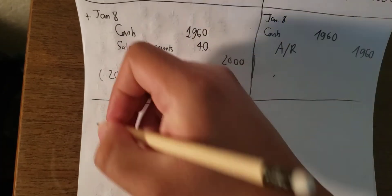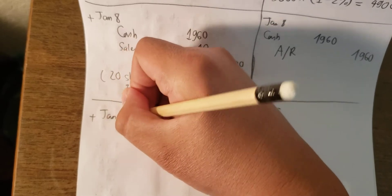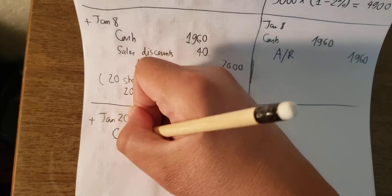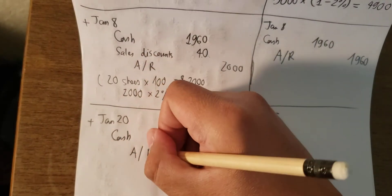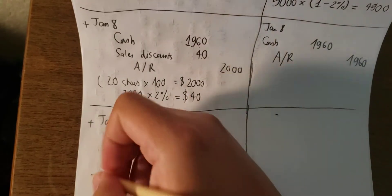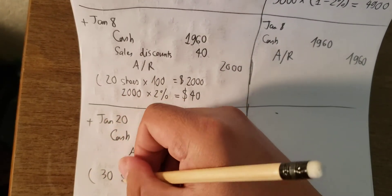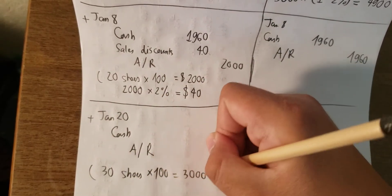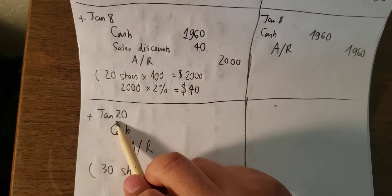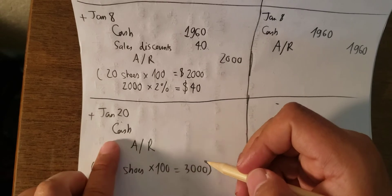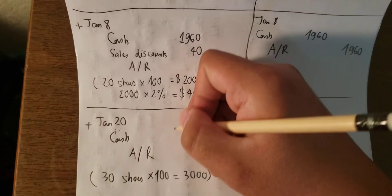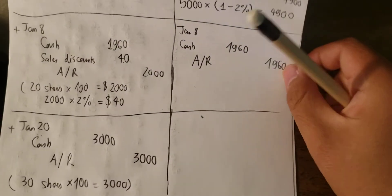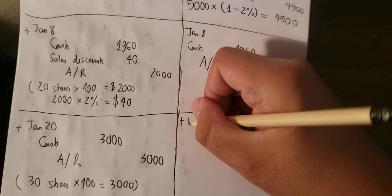Next, for January 20th — this is over 10 days — we record cash and accounts receivable only. For example, if the customer purchases 30 pairs: $100 multiplied by 30 is $3,000. Because they paid after 10 days, they don't receive the discount, so we simply record $3,000 cash and $3,000 accounts receivable.